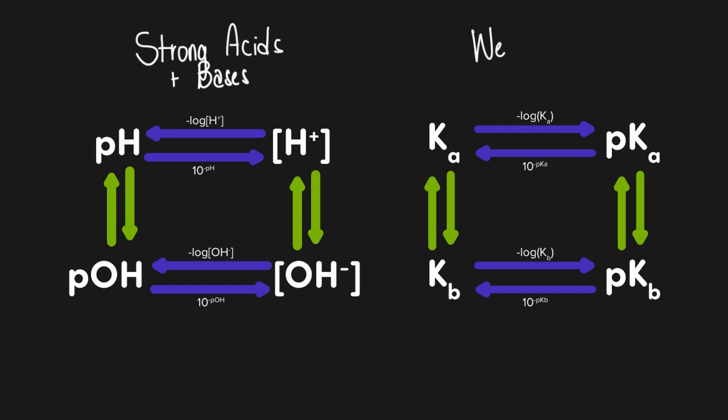Whereas the Ka and Kb portions of the map deals with the equilibrium of specific acids and bases. Typically, we will use this side of the map for weak acids and bases since they don't fully dissociate, and how much H+ or hydroxide they generate depends on their equilibrium values. Our map is almost complete. We're just missing the bridge between the two sides, which we'll look at soon.